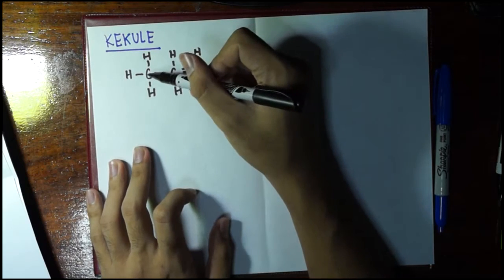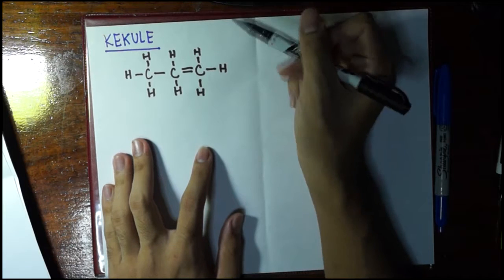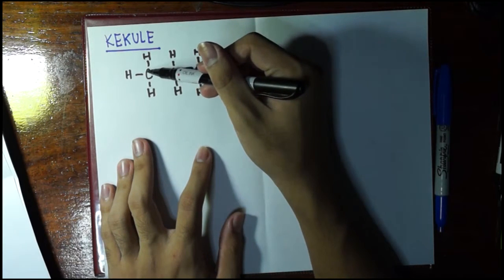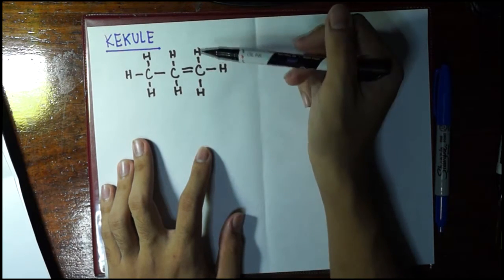you should know that each carbon atom should have four bonds around it. For example, look at this carbon. This one has four bonds: this bond, this bond, this bond, and this bond.